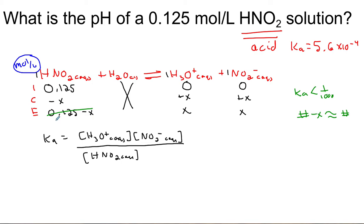We have that here. I am going to not use the minus X and just use an approximated concentration of 0.125. We have 5.6 times 10 to the negative 4 equals X and X as our two concentrations. I will simplify that to X squared divided by the final concentration of HNO2, which is 0.125.